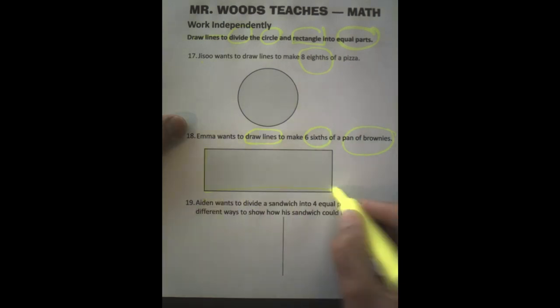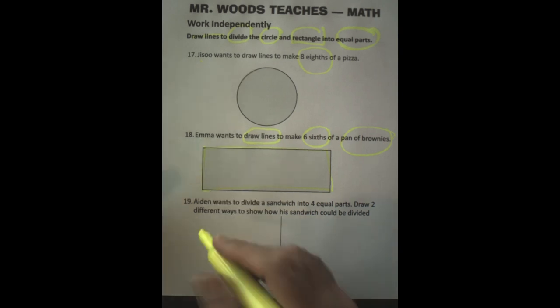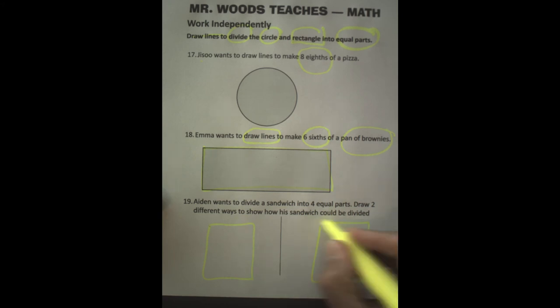This is where you need to draw those lines. Aiden wants to divide a sandwich into four equal parts. Draw two different ways to show how his sandwich could be divided. Again, we're going to have one here and one here. So you have to show how you can divide that sandwich into two equal parts using two different ways.